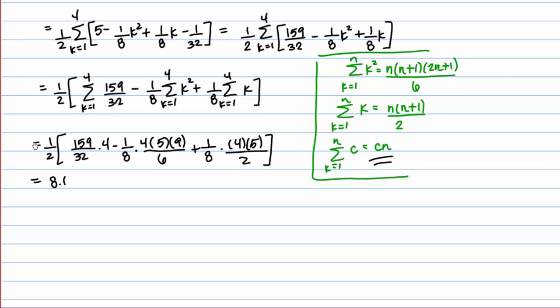8.6875 is my estimate for the area under the curve. In previous videos I did right and left Riemann sums. On the right Riemann sum I got 8.125, and on the left Riemann sum for 4 rectangles I got 9.125. It makes sense that this would be in between them, because it's the midpoint Riemann sum — that at least makes sense.